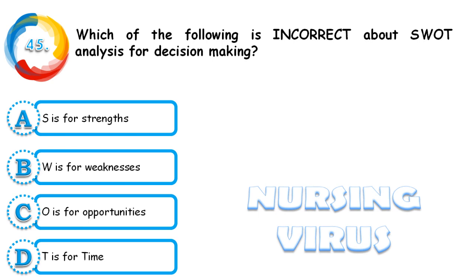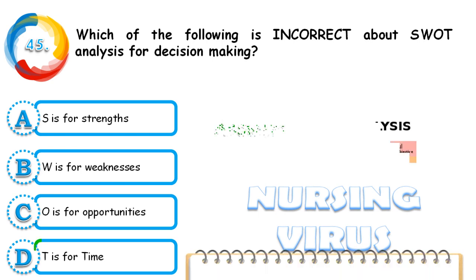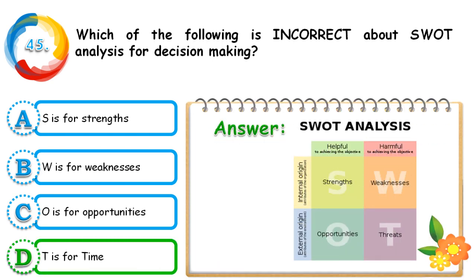Question 45: Which of the following is incorrect about SWOT analysis for decision making? S is for Strength, W is for Weakness, O is for Opportunity, and T is for Time. The correct answer is that T stands for Time — this is incorrect. In SWOT analysis, T actually stands for Threats.